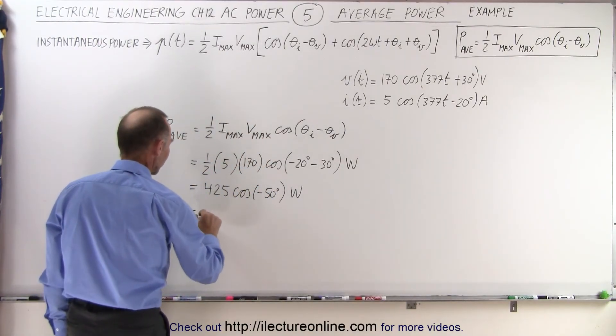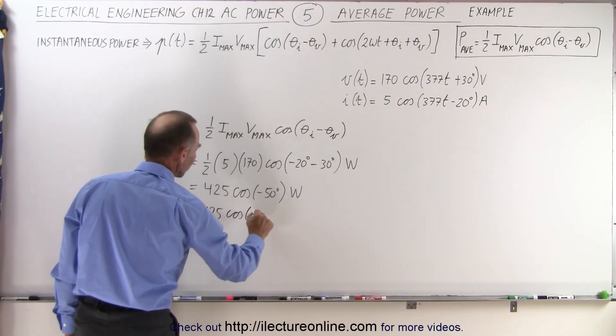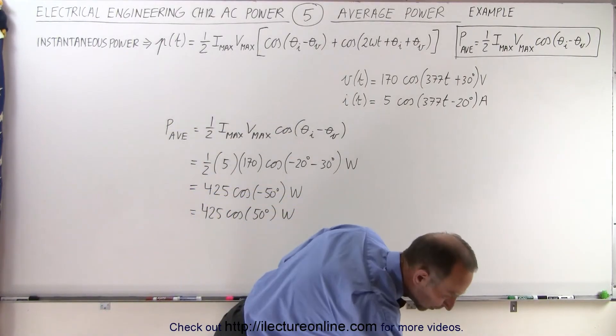And the cosine of minus 50 is the same as 425 times the cosine of a positive 50 degrees, that doesn't make any difference. And now let's go ahead and calculate that number.